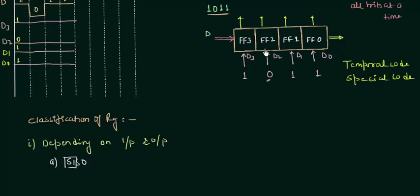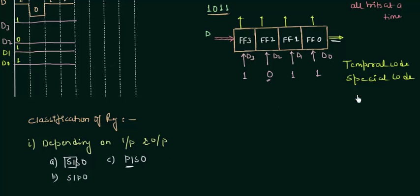The third type is PISO — Parallel Input, Serial Output. In this we enter the data in parallel form and get the data out in serial form. And the last one is PIPO — Parallel Input, Parallel Output. Simply we are entering the data in parallel and getting out the data in parallel. So this is the classification depending upon the input and output.